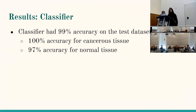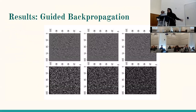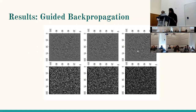As for our results, we were initially concerned because of the disparate ratio of normal versus cancerous samples. But our classifier had 99% accuracy on the test dataset — 100% accuracy on cancerous tissue and 97% accuracy on normal tissue. Here you can see the results of applying guided back propagation on some of these images. The top grayish images are the guided back propagation results and the bottom are the input data. You can see a certain pattern across the input images in the guided back propagation — there are features not visible in the original input data — which lends visual credibility to the fact that guided back propagation is detecting certain patterns.